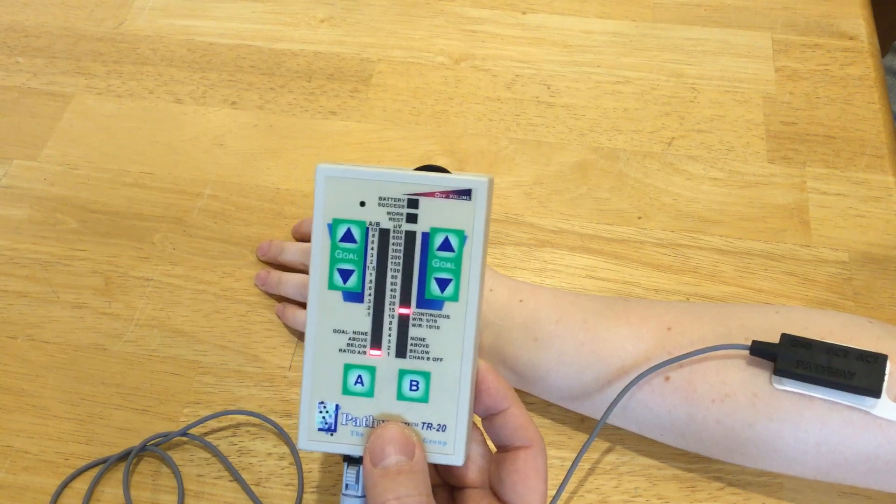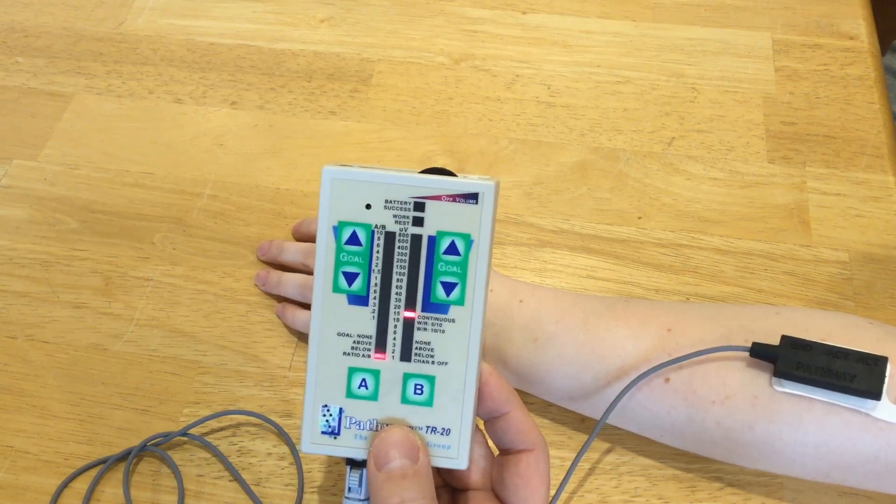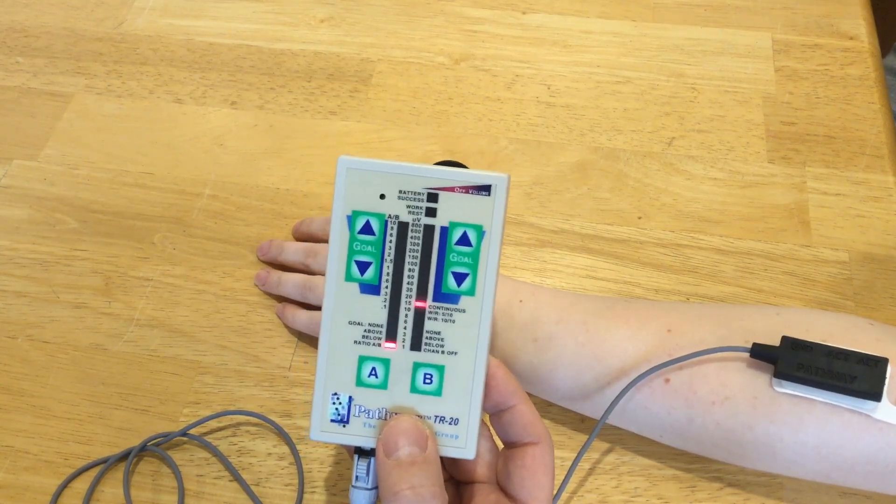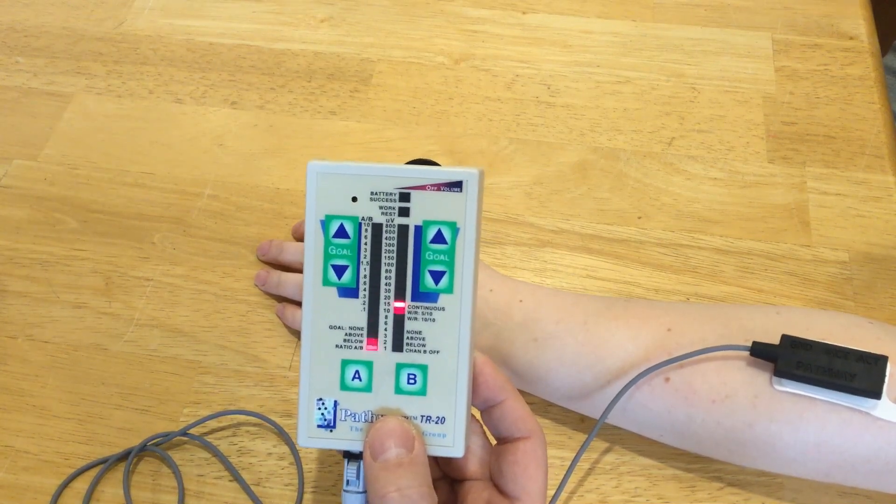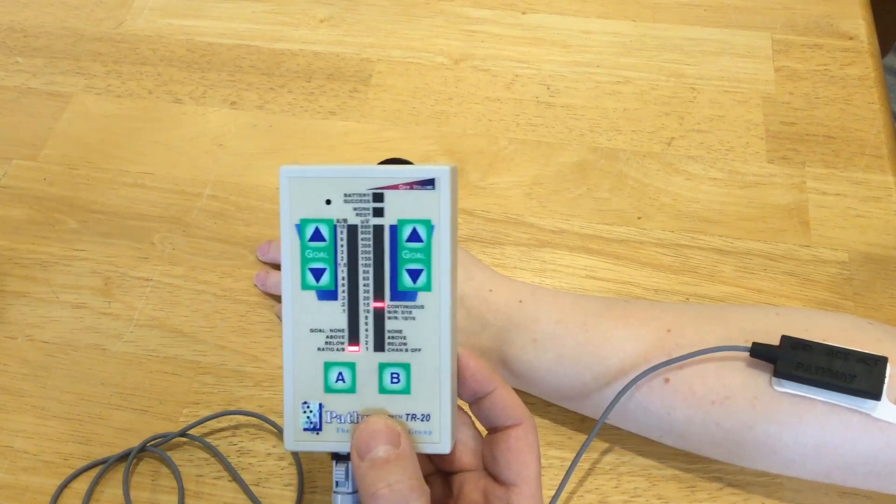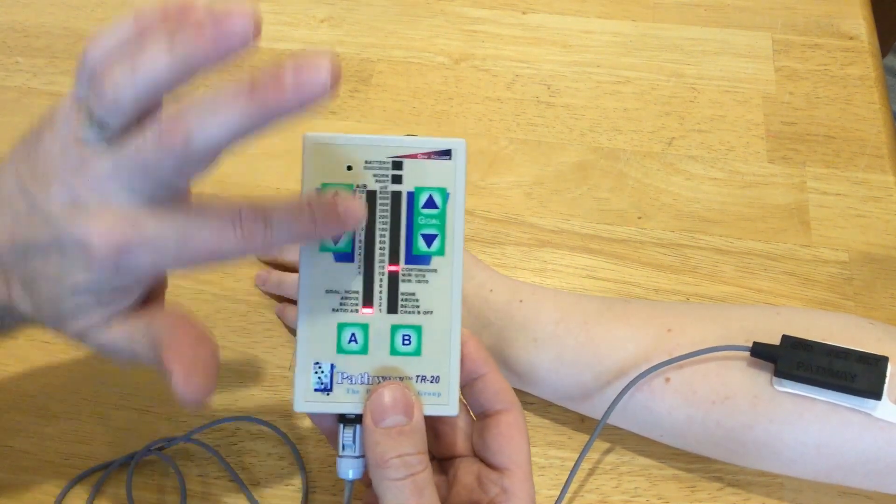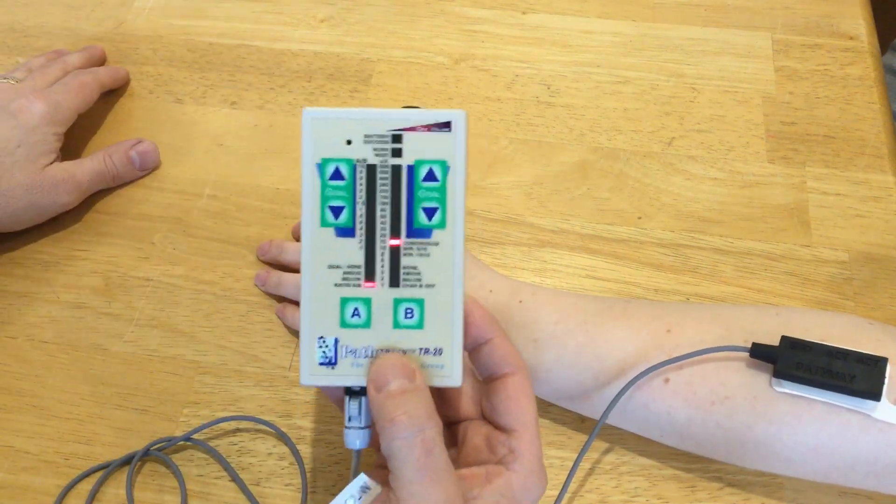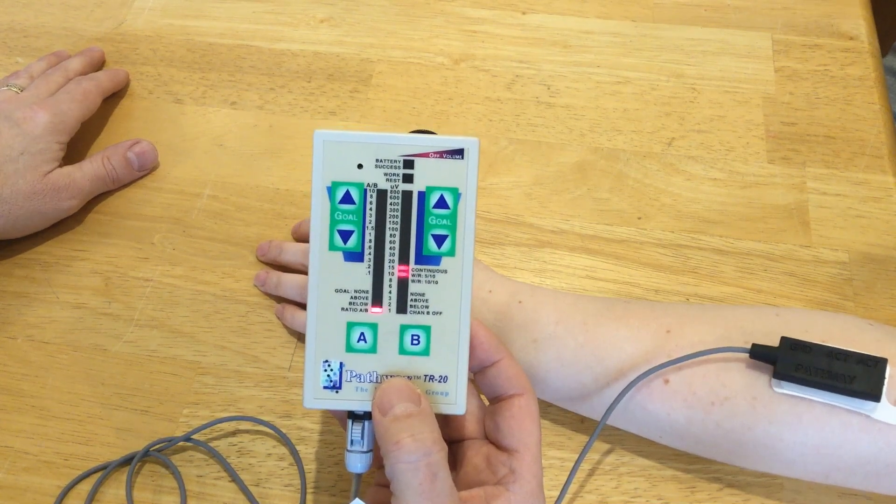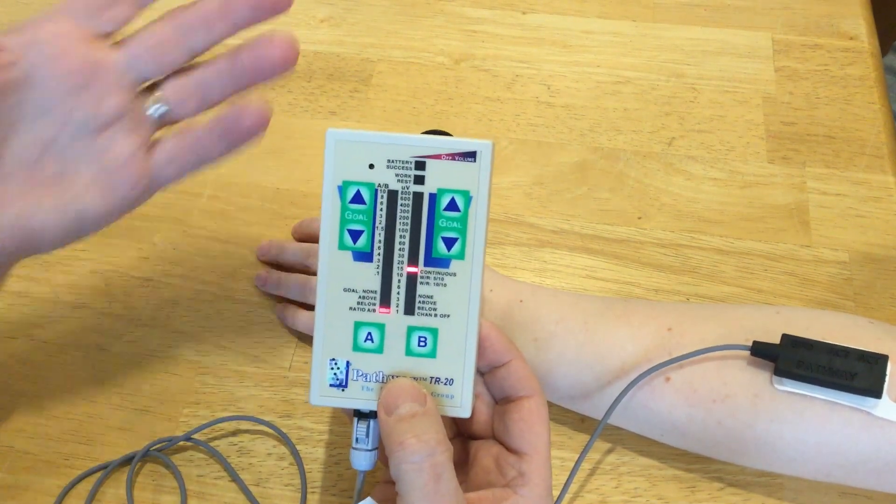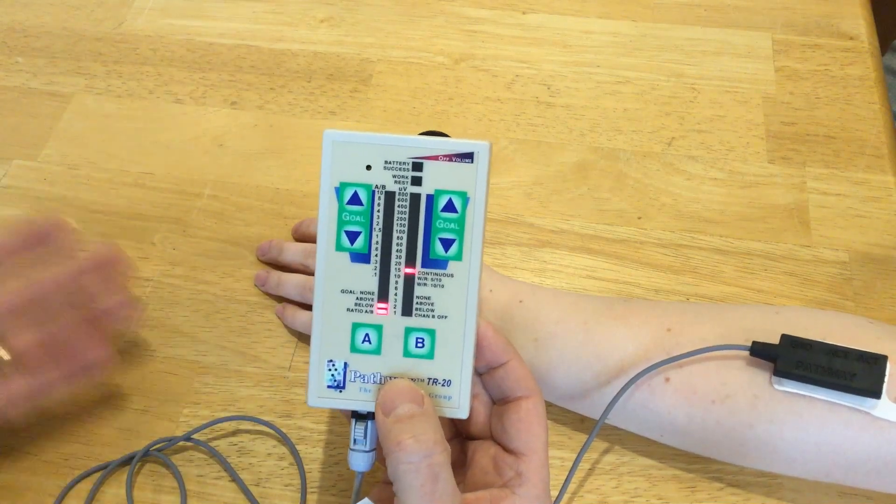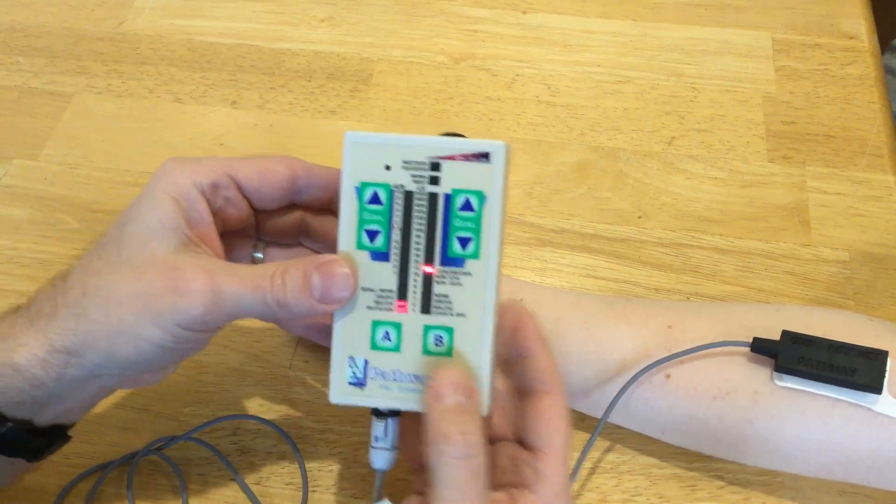So you could use this with someone, for example, that had a radial nerve palsy. They were having a hard time relearning how to use those muscles innervated by the radial nerve, and this would help them to see what their muscles are doing. Even if the muscles aren't strong enough to make a movement, they could see that they're actively firing.